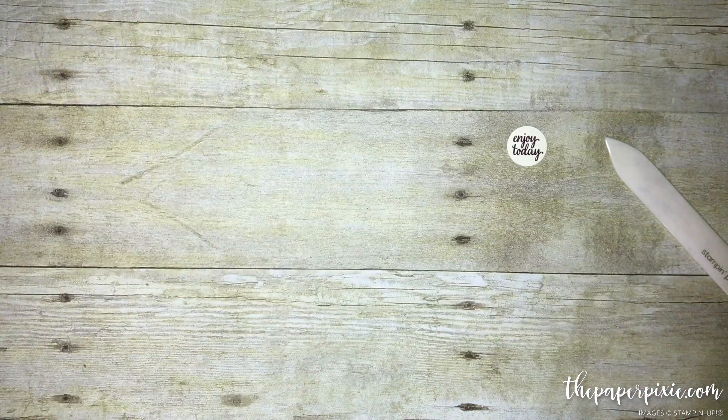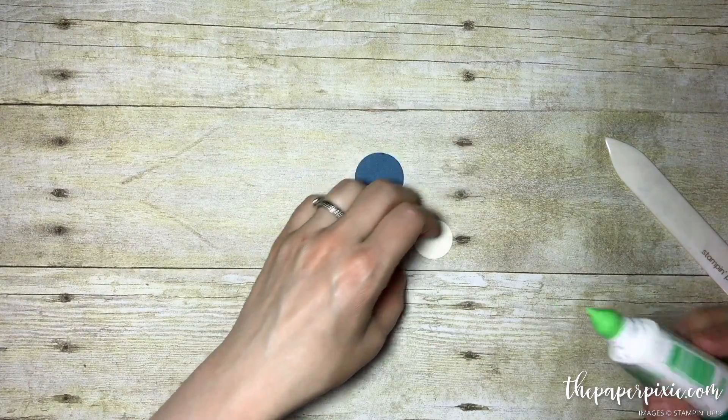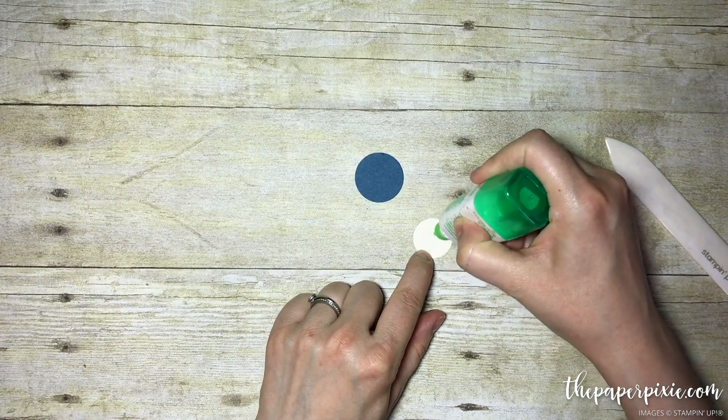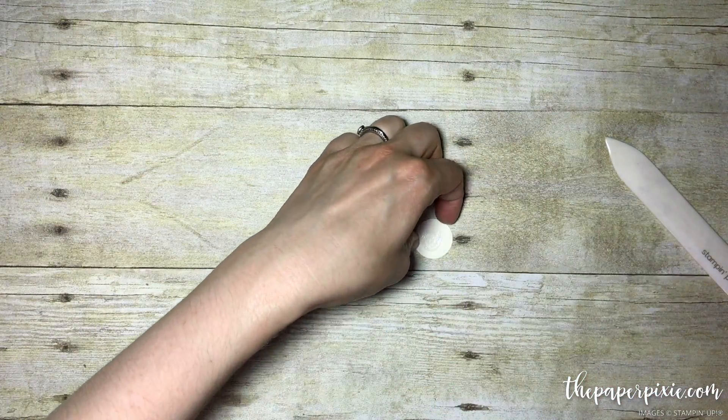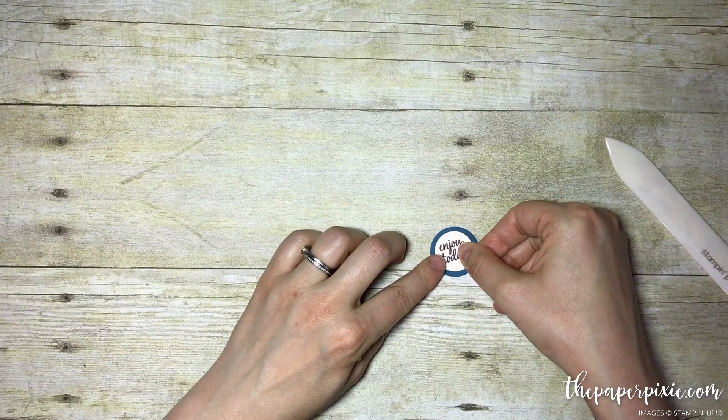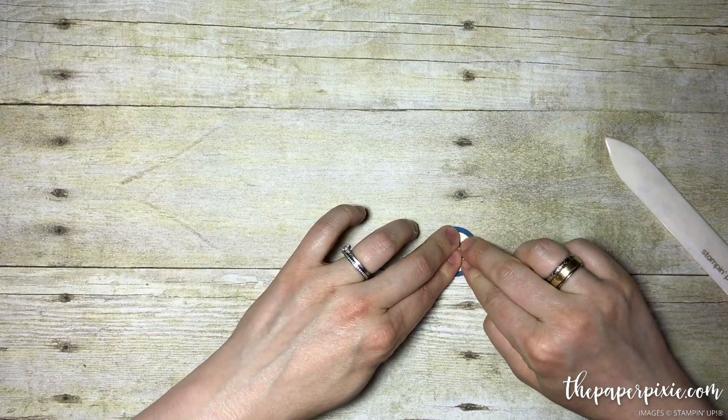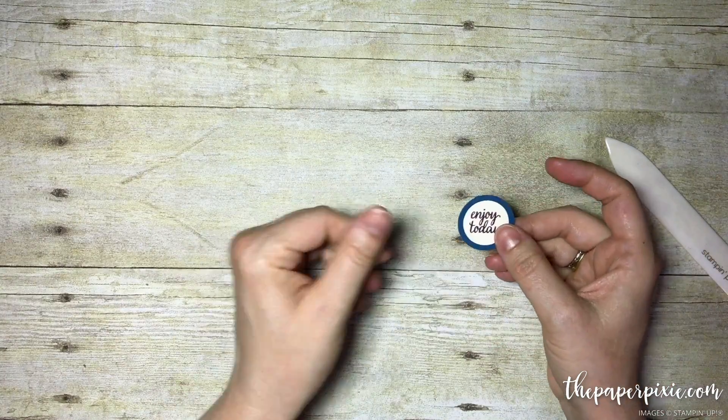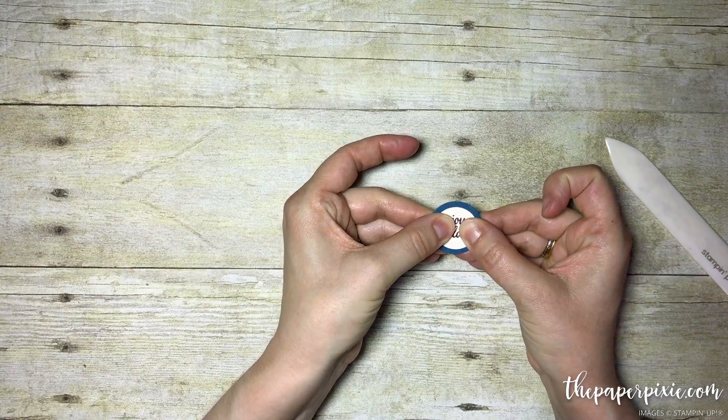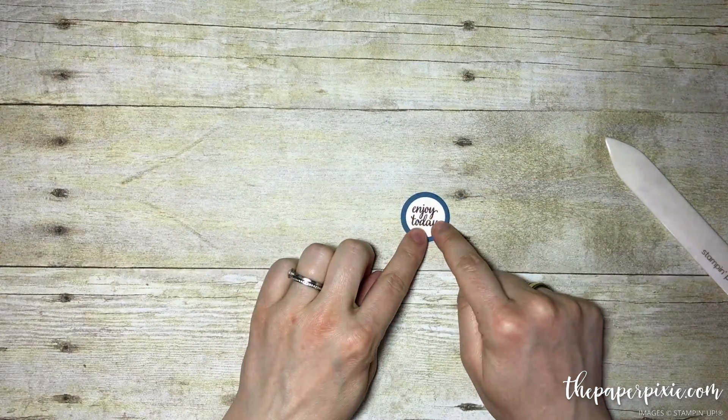I'm going to adhere the sentiment to the Dapper Denim circle, just a tiny little circle of glue. I love the mono multi glue because it gives you a moment to shift things around if you need to get it lined up just right.